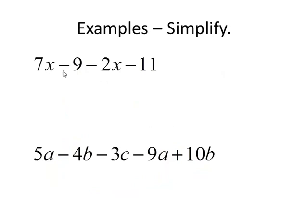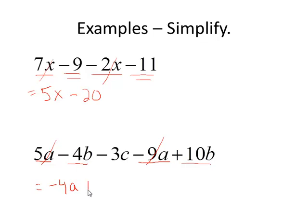A couple of examples. Simplify by combining like terms. I have a 7x. I go looking for a like term. And I have one here. 7x minus 2x is 5x. Lightly cross those off because I've used those up. And now I start looking at negative 9 and negative 11, which are also like terms. And they combine to be negative 20. In the second example, 5a minus 9a is negative 4a. Negative 4b plus 10b is plus 6b. And I have one term left, negative 3c. And I don't have anything to combine it with, so I just bring it along for the ride and write it down.